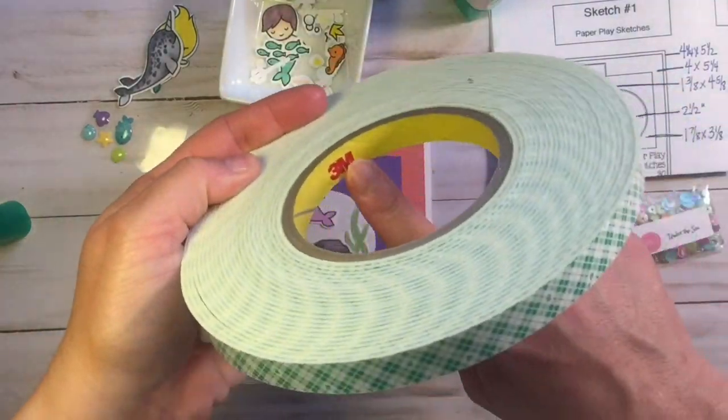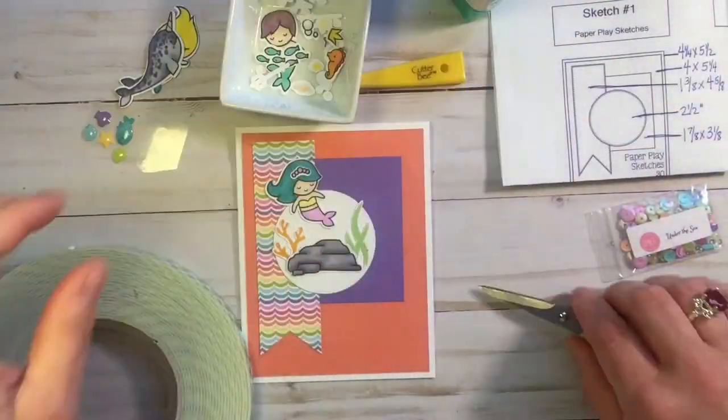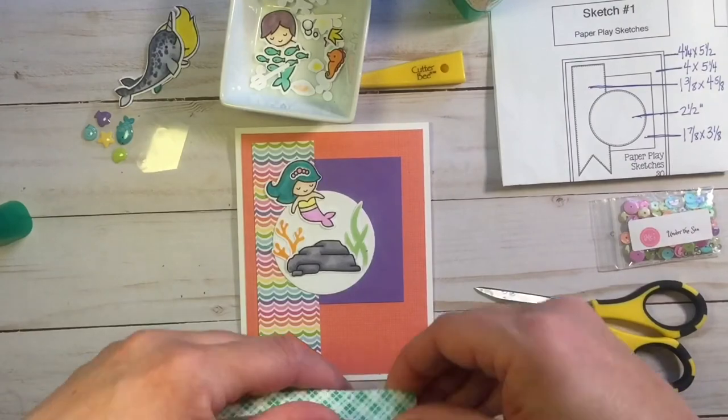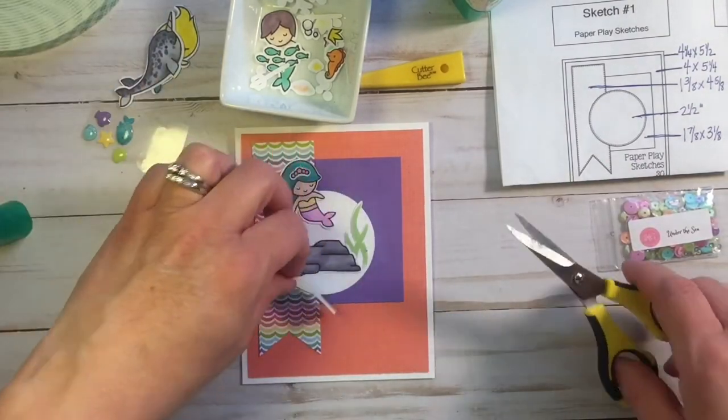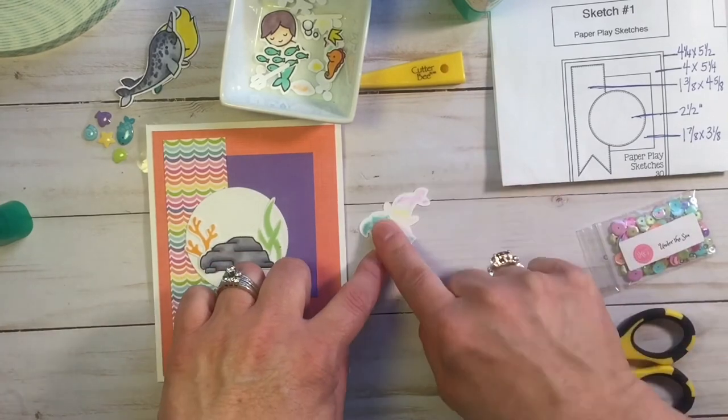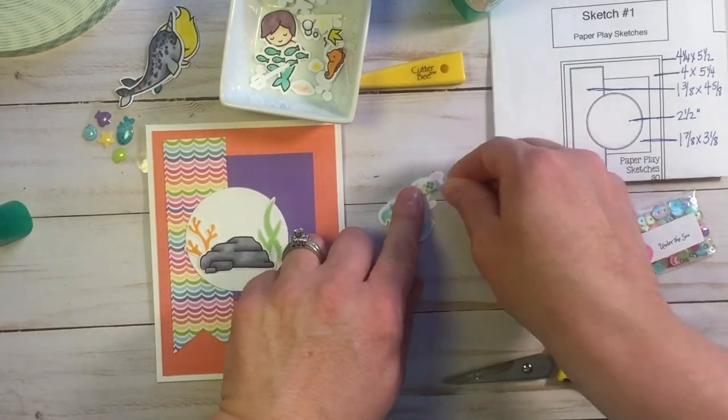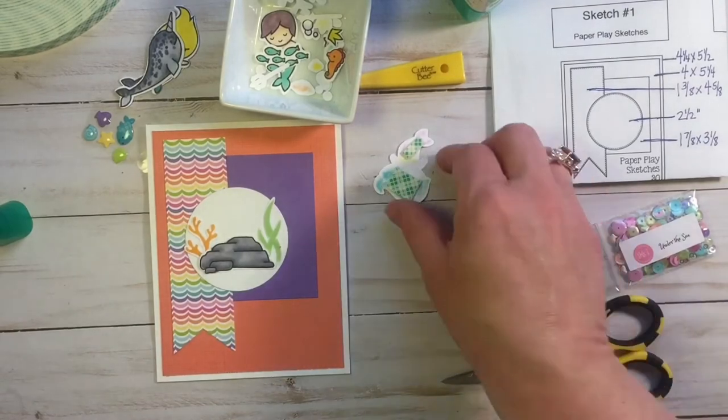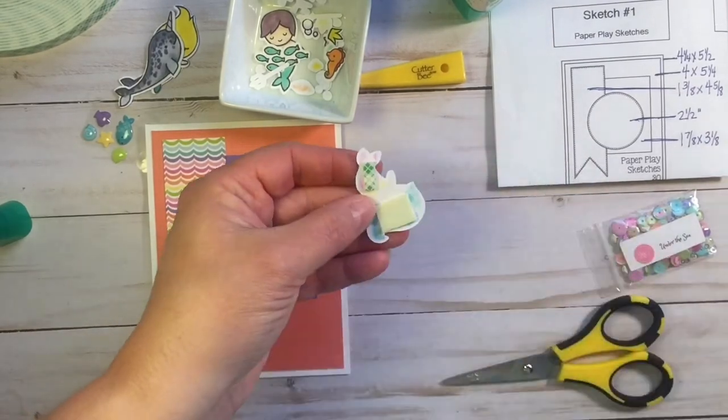I'm going to pop her up on some foam tape. Again, this is a step you don't need to do. You can very easily just tape her down flat. And in fact, to mail it, it's better off to tape it down flat.